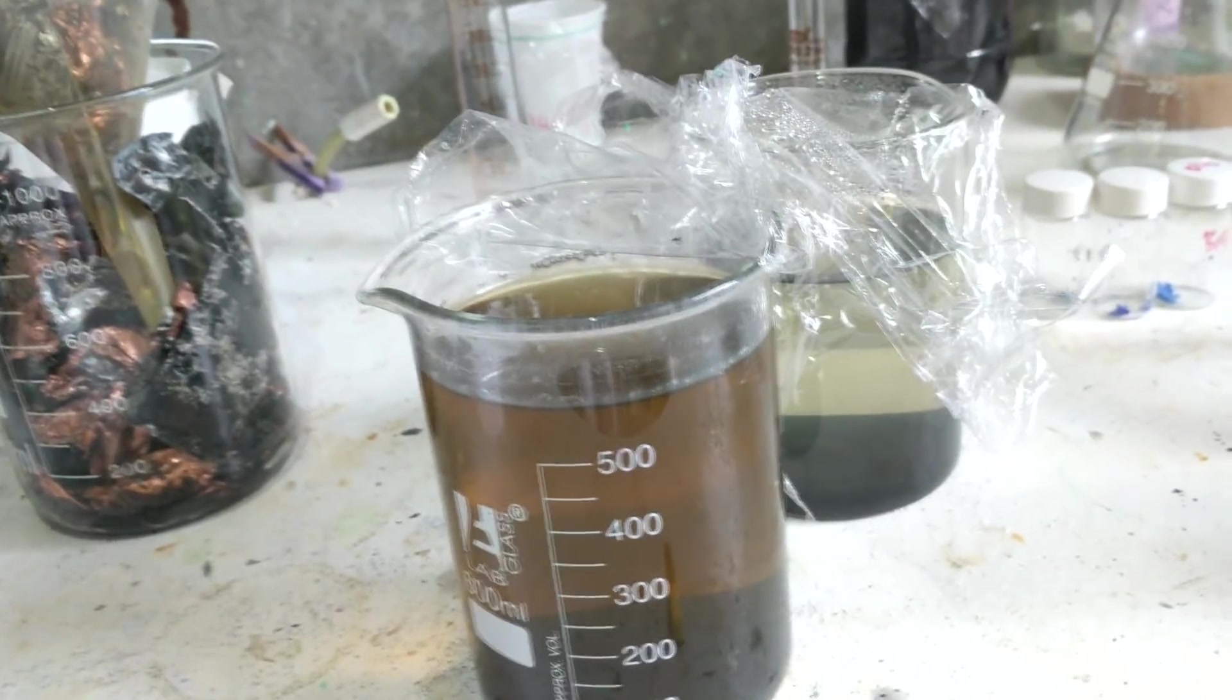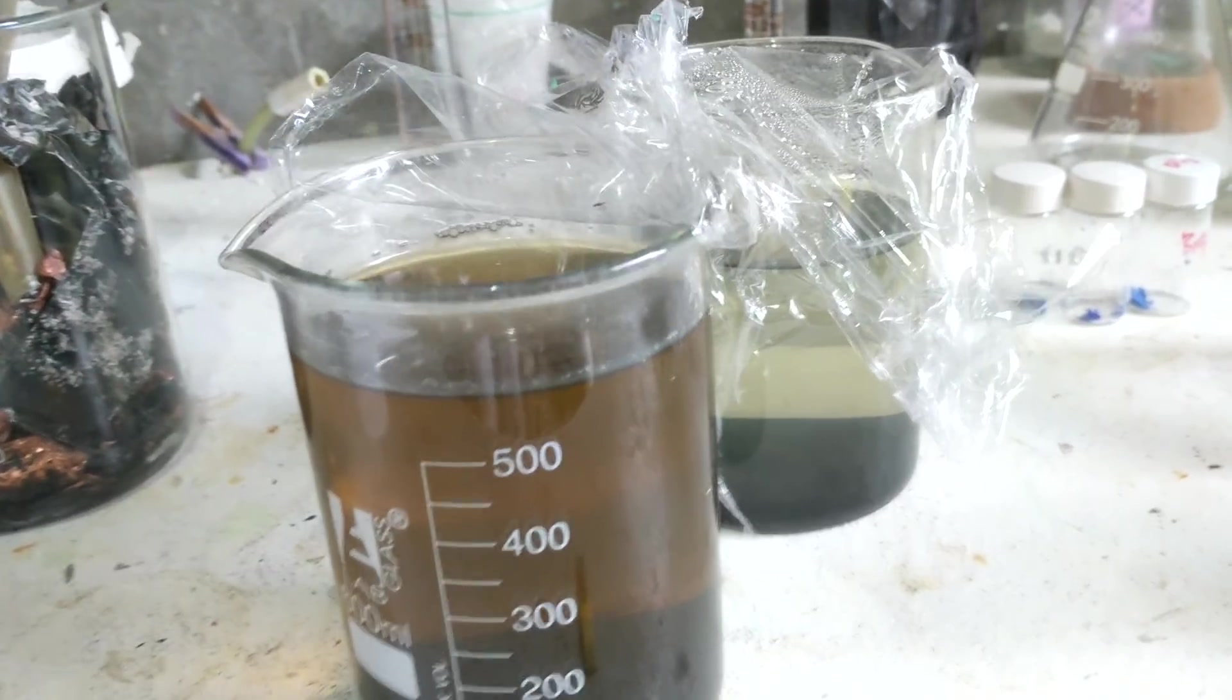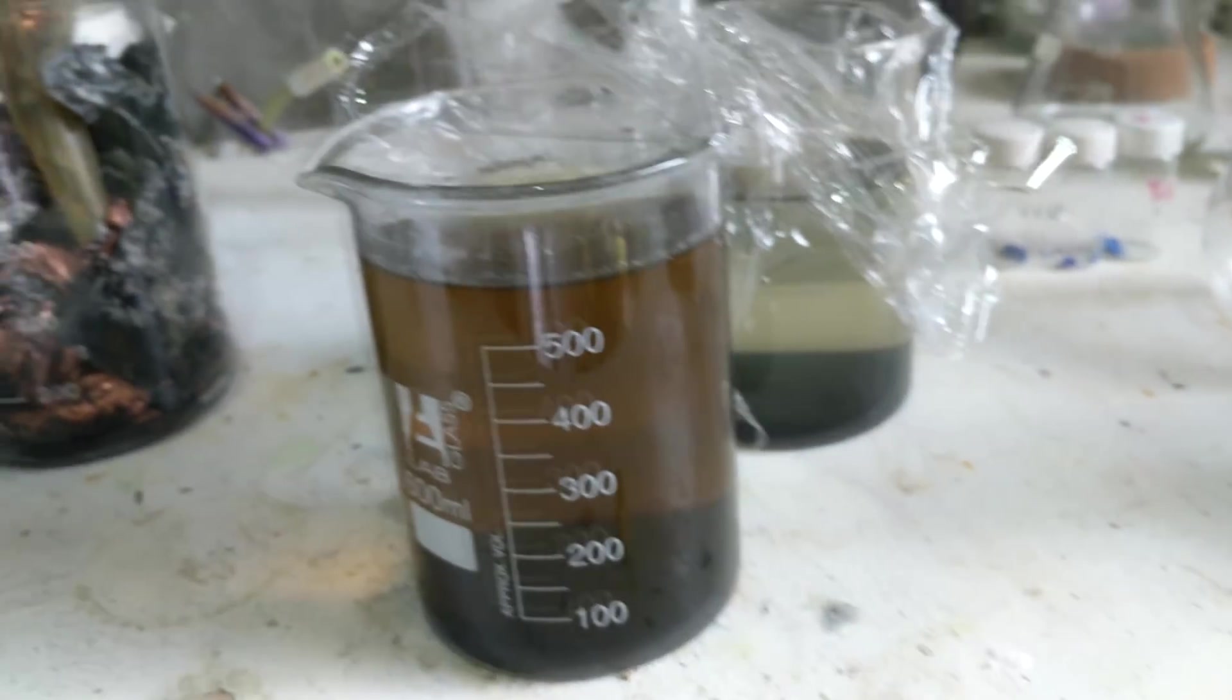So instead of discarding this top layer, what I'm going to do is just keep it. So if we get no yield at the end, we can always go back and check that maybe all our lithium has been leached out of the cobalt oxide substrate.